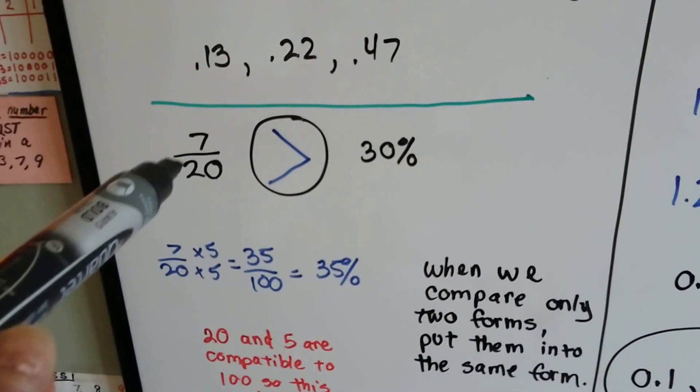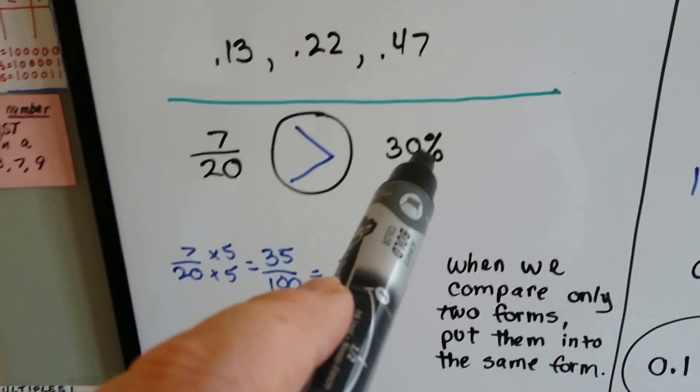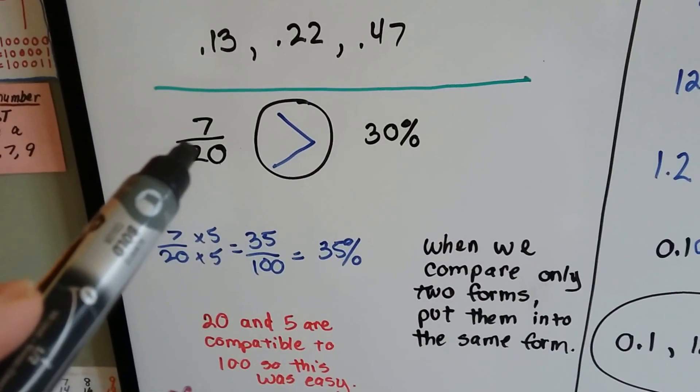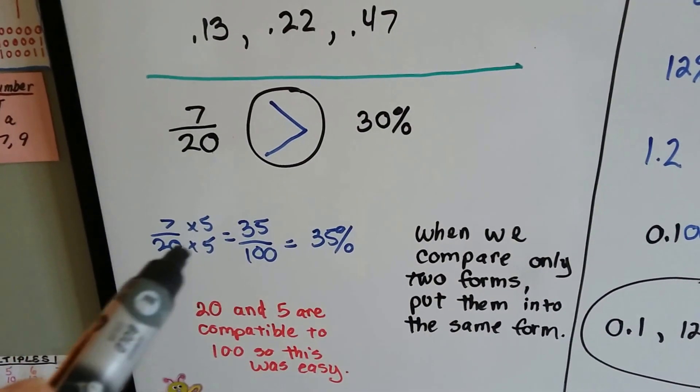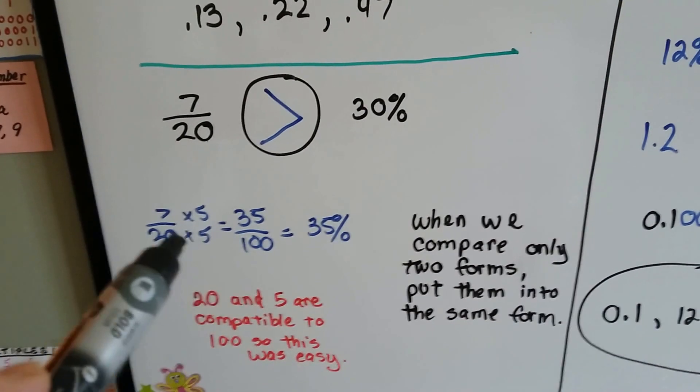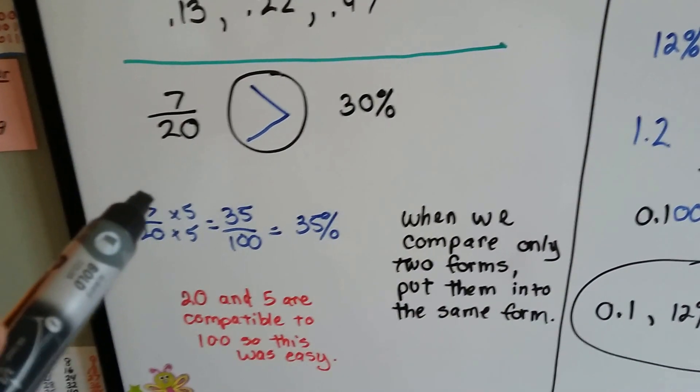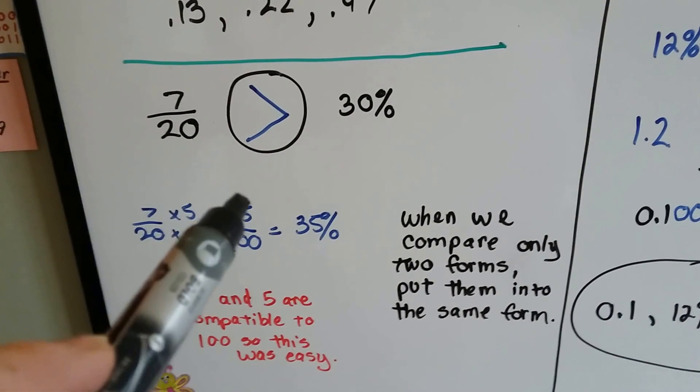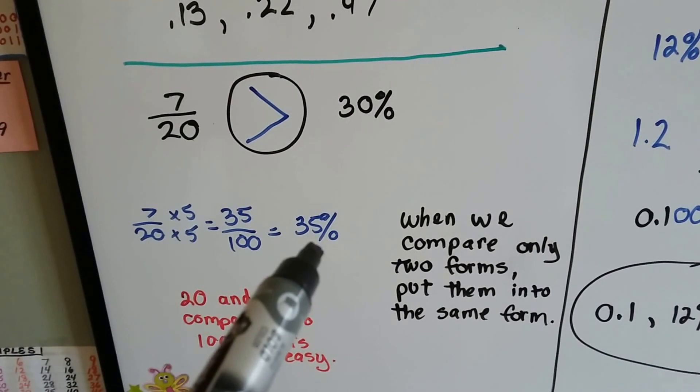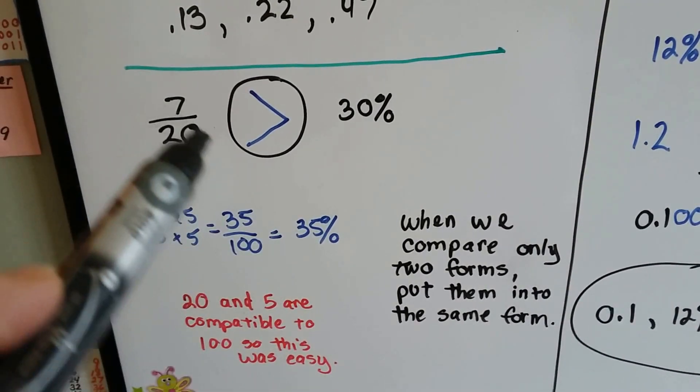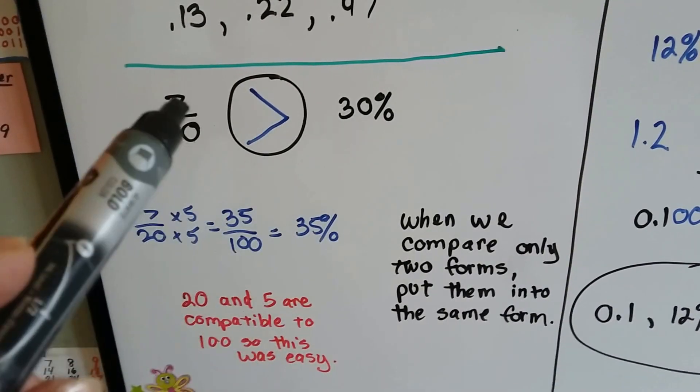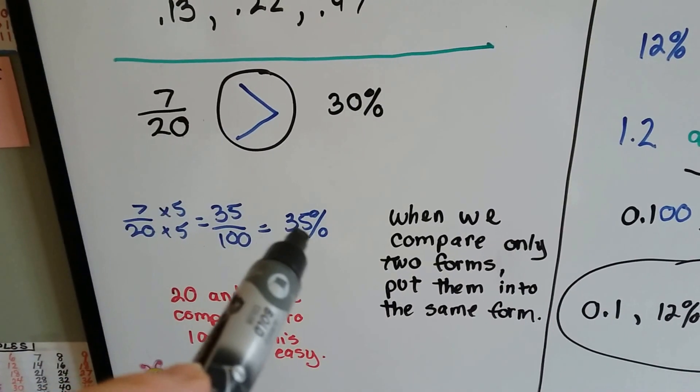If we have 7 twentieths, and we need to compare it to 30 percent, well, it's a good thing that 20 is very compatible with 100 by multiplying it by 5. We multiply the 7 by 5, and it becomes 35 over 100, or 35 percent. So we know 35 percent is bigger than 30 percent by 5 percent.